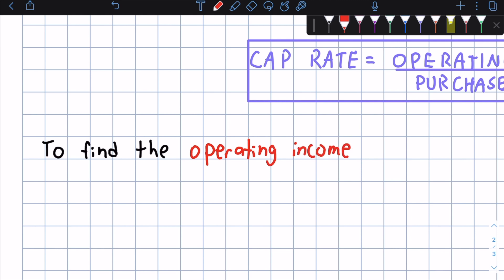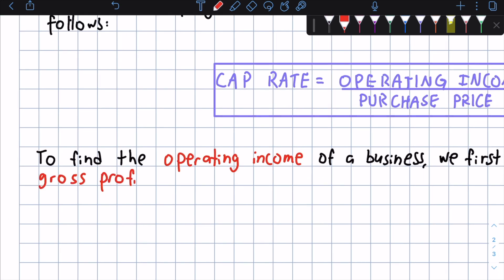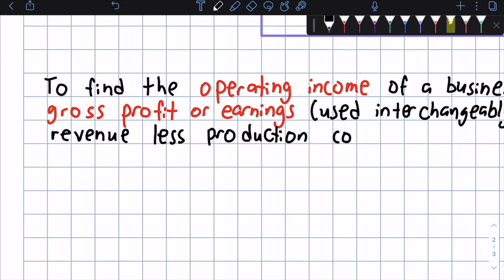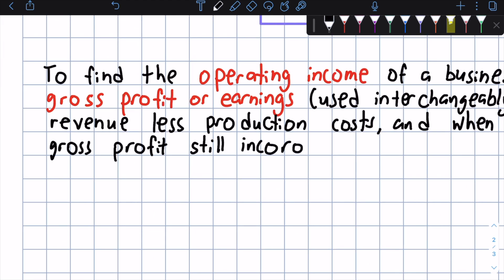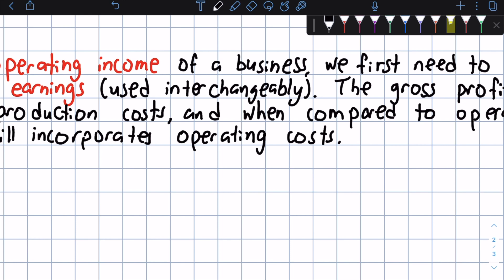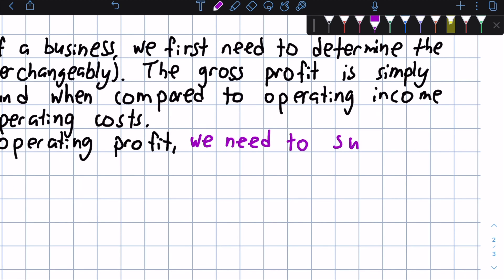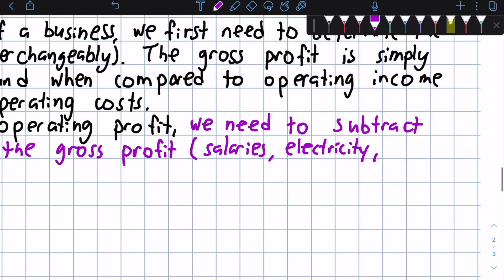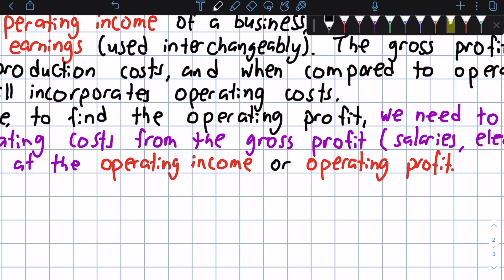So in order to find this operating income in the numerator of a business, we first need to determine the gross profit or earnings. And these are used interchangeably. Gross profit and gross earnings are the same thing. The gross profit is simply the revenue of the business minus production costs. And this is simply for the cost of the product and to build it. And when we compare it to operating income, gross profit still incorporates operating costs. Therefore, in order to find the operating profit or income, we need to subtract all the operating costs from this gross profit figure. And this includes things like salaries, electricity, rent, all those other costs as well. And this allows us to arrive at the operating income or operating profit to be used to find the cap rate.